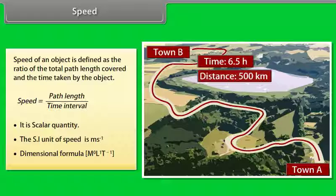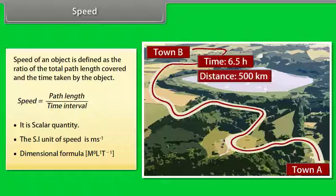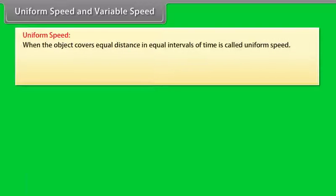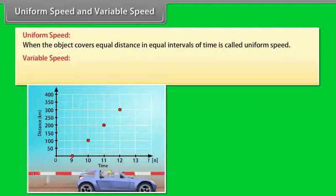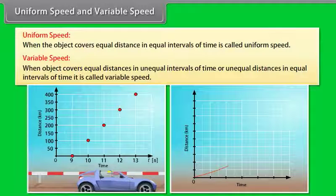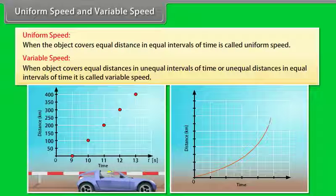The dimensional formula for speed is M⁰L¹T⁻¹. Uniform speed: when an object covers equal distances in equal intervals of time, it is called uniform speed. Variable speed: when an object covers equal distances in unequal intervals of time, or unequal distances in equal intervals of time, it is called variable speed.